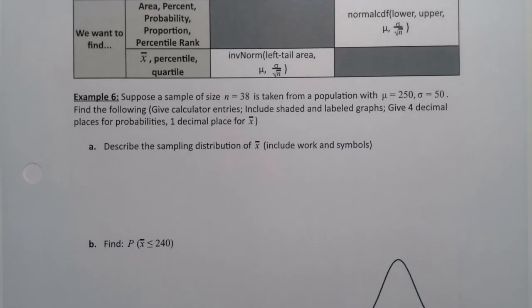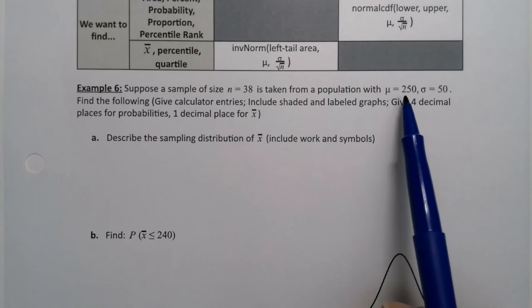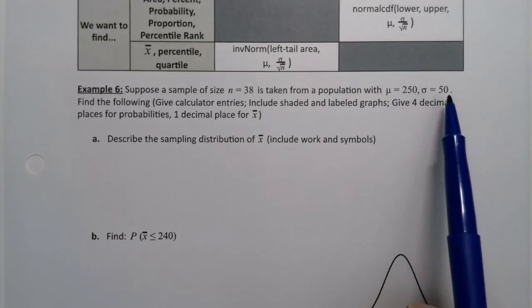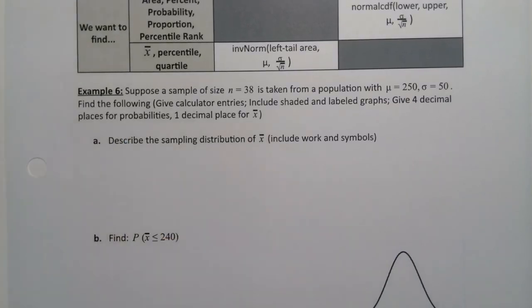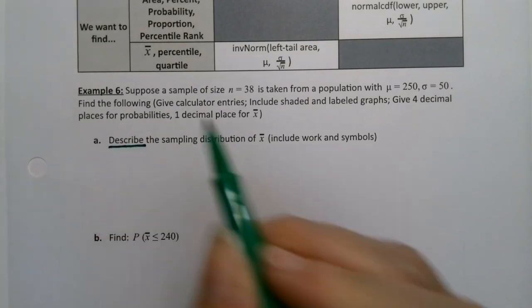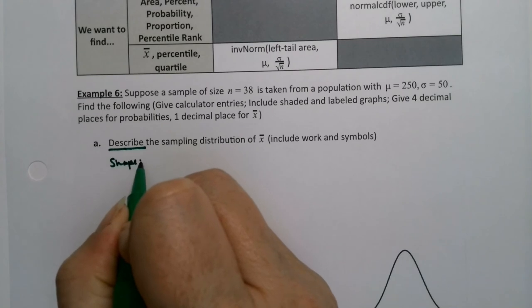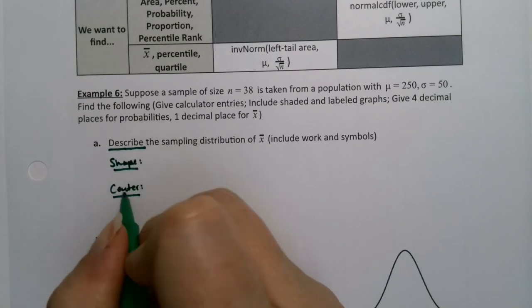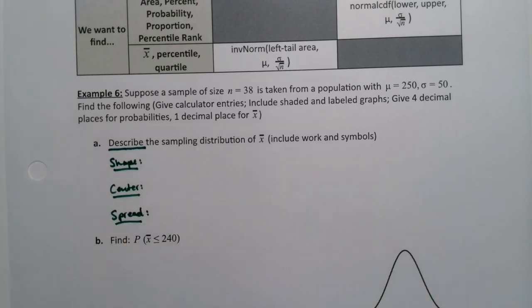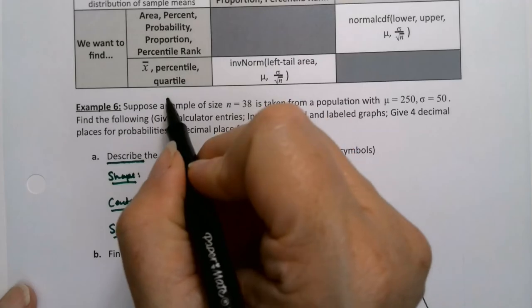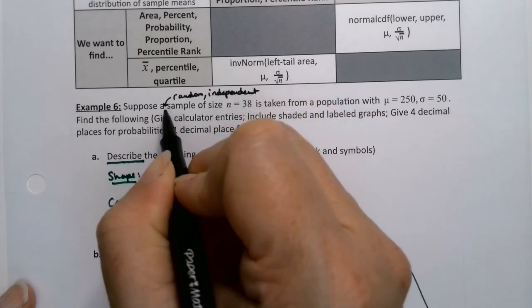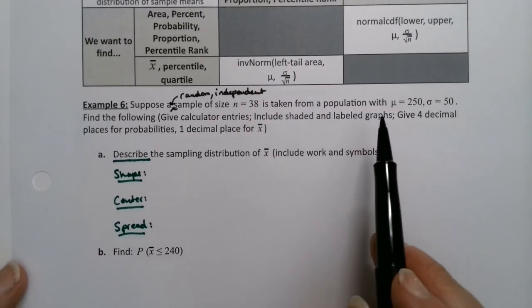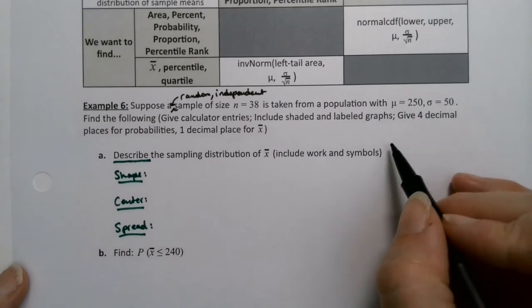Let's suppose a sample of size n equals 38 is taken from a population with mean μ equal to 250 and σ equal to 50. We're going to find the following, give calculator entries, shaded graphs, all that good stuff. The first thing they're asking us to do is describe the distribution. When they want that, what they want is shape, center, and spread. I should tell you right off the bat that it's a random and independent sample. We know random and independent because it's given.